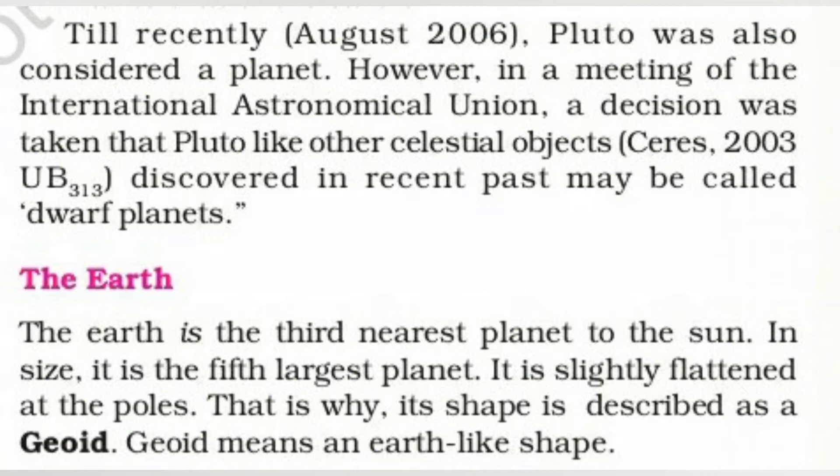The Earth. The Earth is the third nearest planet to the sun. In size, it is the fifth largest planet. Sun se doori ke according hamari Earth third planet hai, aur size mein yeh fifth largest planet hai. Yeh poles ke paas thodi chapti hai; yahi reason hai ki iski shape ko geoid kaha jaata hai. Geoid means prithvi ke samaan aakar.